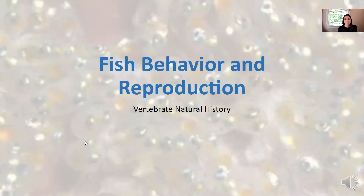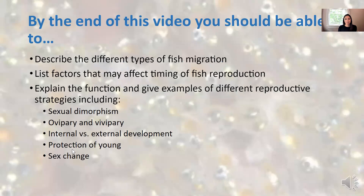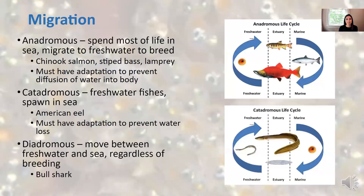Hi everyone, welcome to our Fish Behavior and Reproduction video. By the end of this video, you should be able to describe the different types of fish migrations, list factors that may affect timing of fish reproduction, explain the function and give examples of different reproductive strategies, including sexual dimorphism, ovipary and vivipary, internal versus external development, protection of young, and sex change.